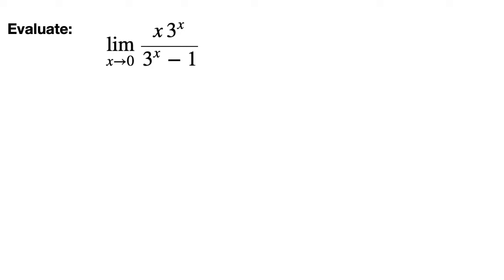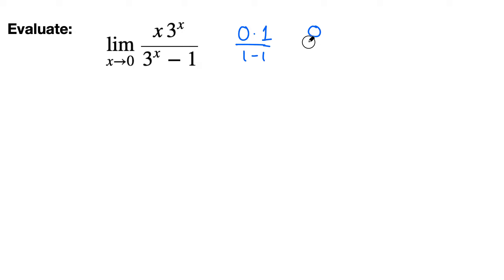Let's evaluate this limit. If we directly plug in x equals 0, we get 0 times 3 raised to 0, which is 1, so 0 times 1 is 0 on the top. On the bottom, 3 raised to 0 is 1, minus 1, that's 0. So we get 0 over 0, which means we can apply L'Hôpital's rule.